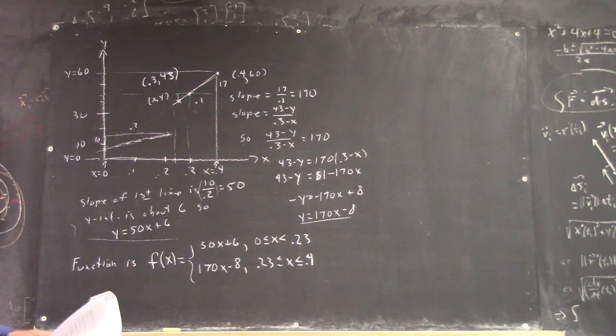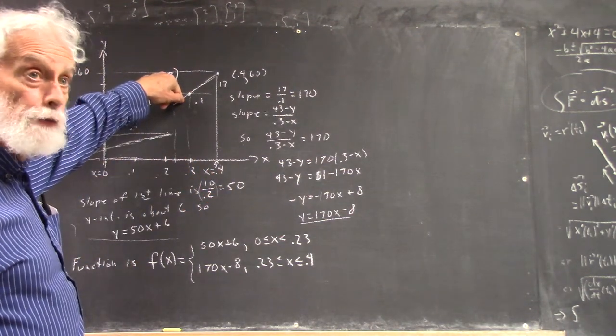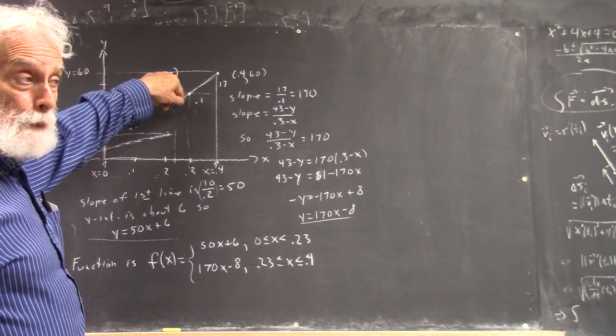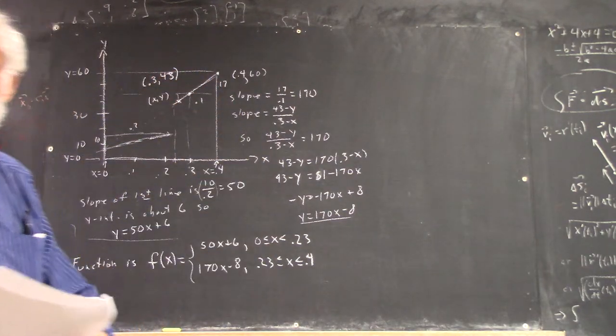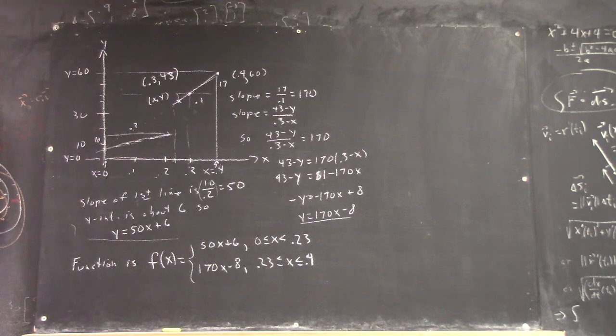Okay? Because from 0.23 to 0.4, when you give an x value, you're going to have to evaluate this function. And we did this earlier in the semester with linear functions, piecewise functions, and other piecewise functions. If you don't understand it, it's something you probably want to review. Thank you. Okay.